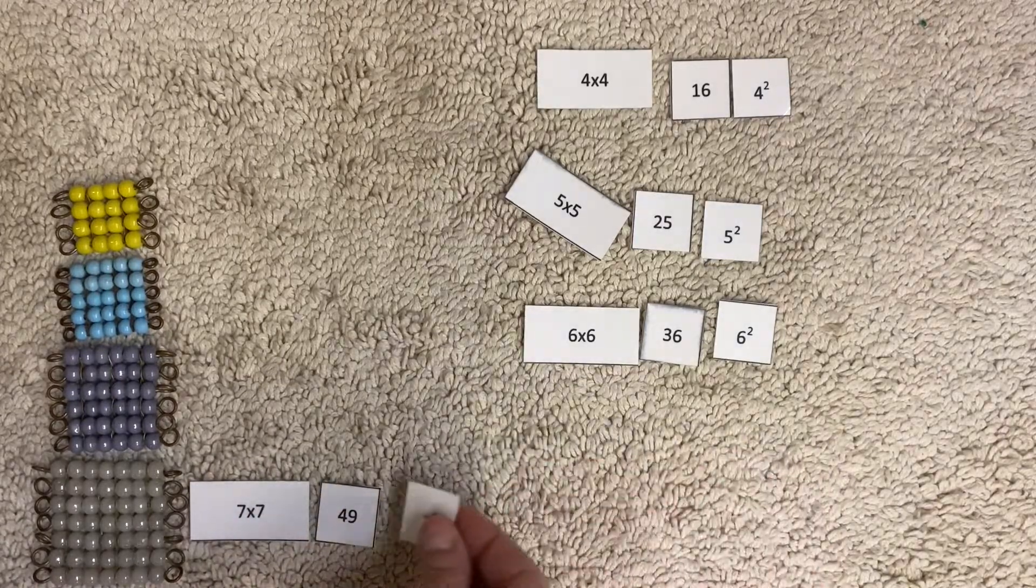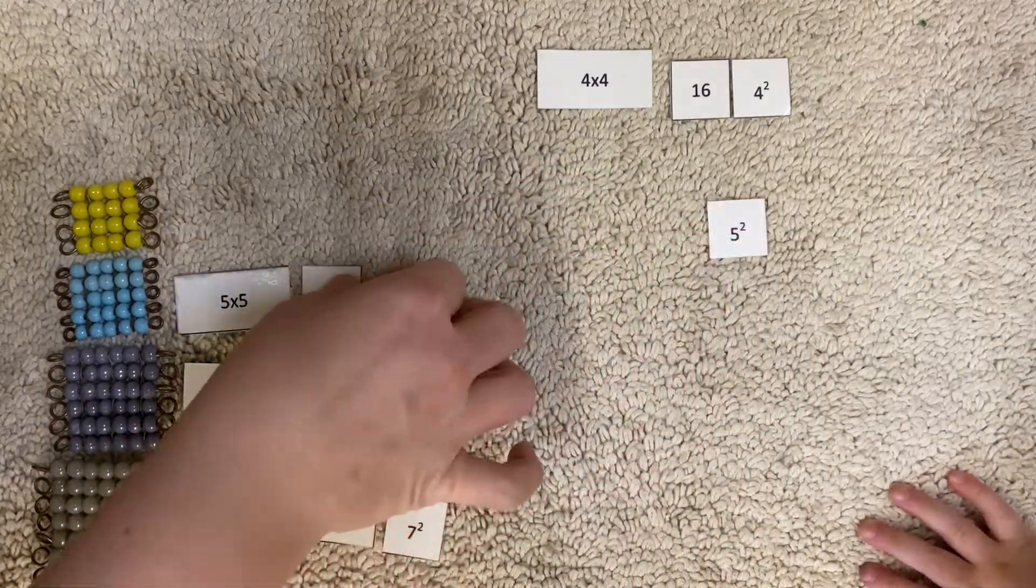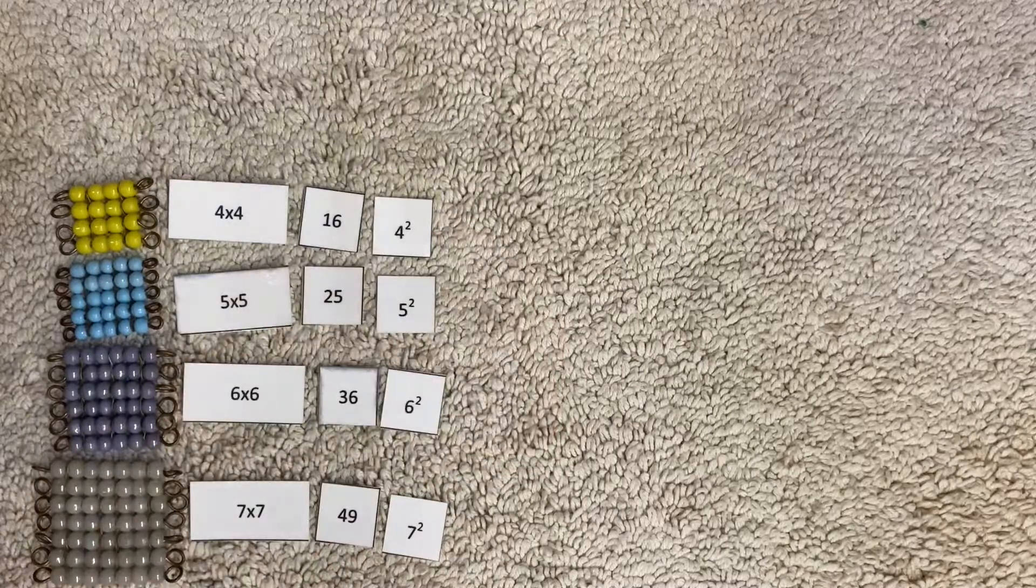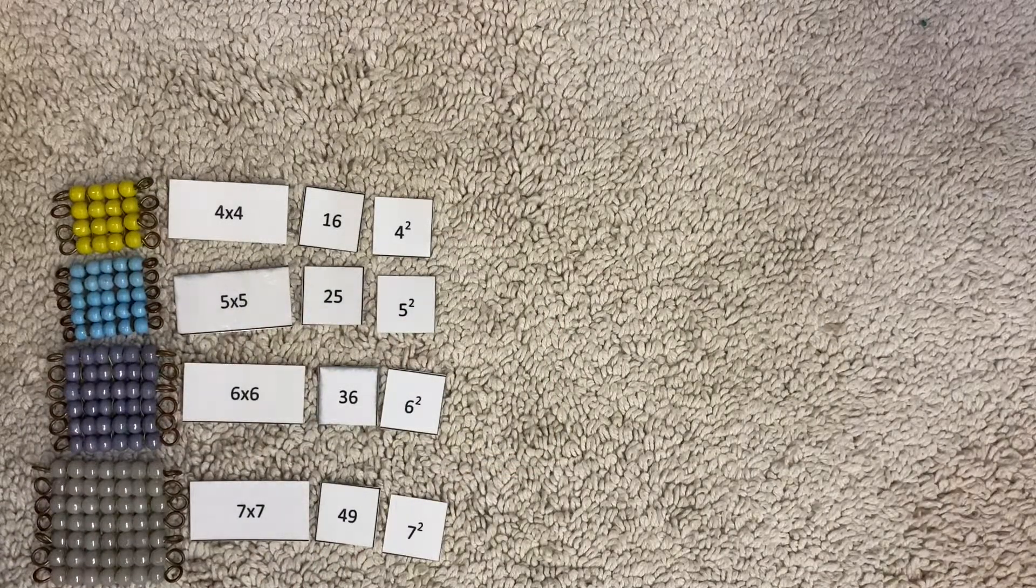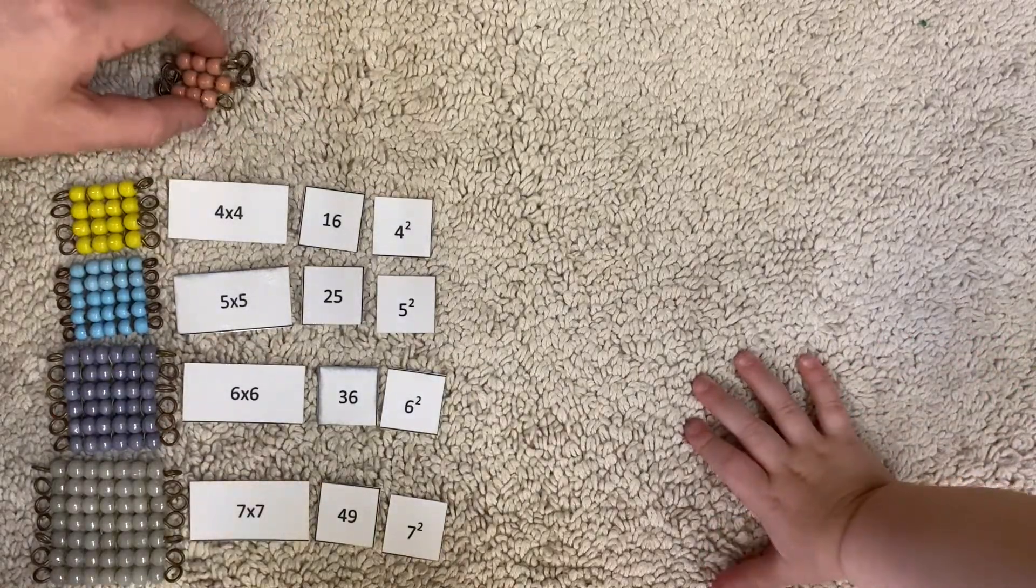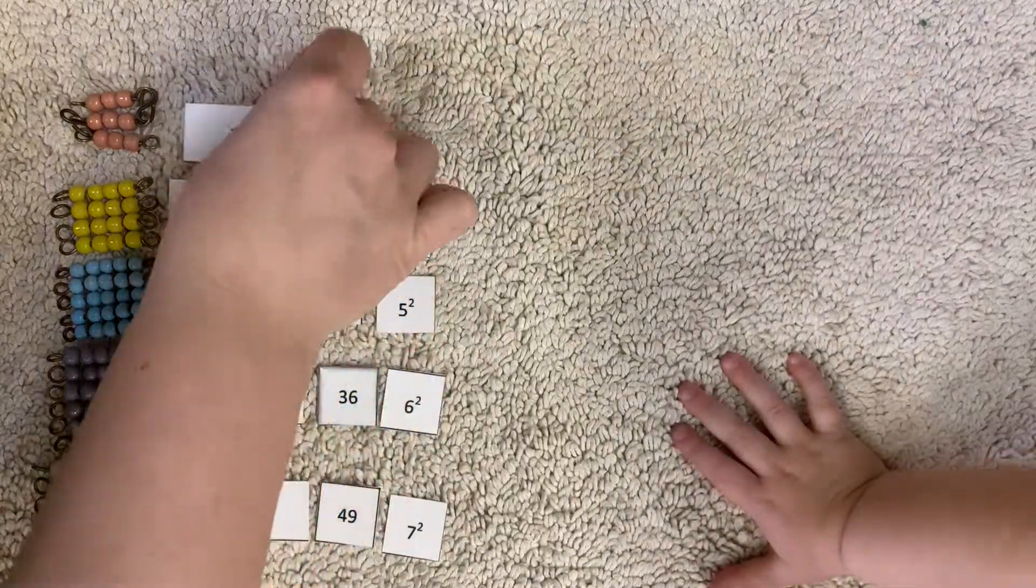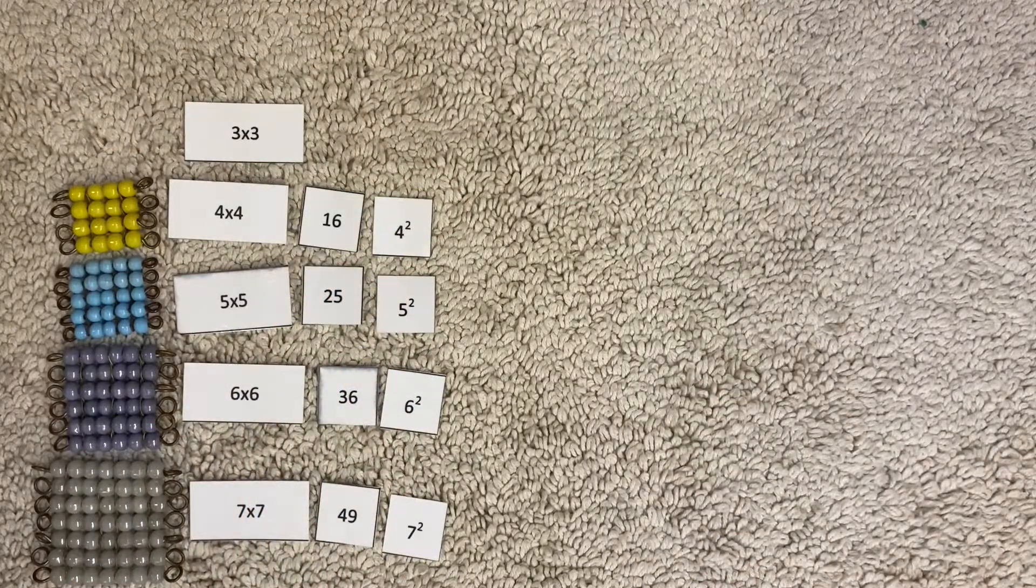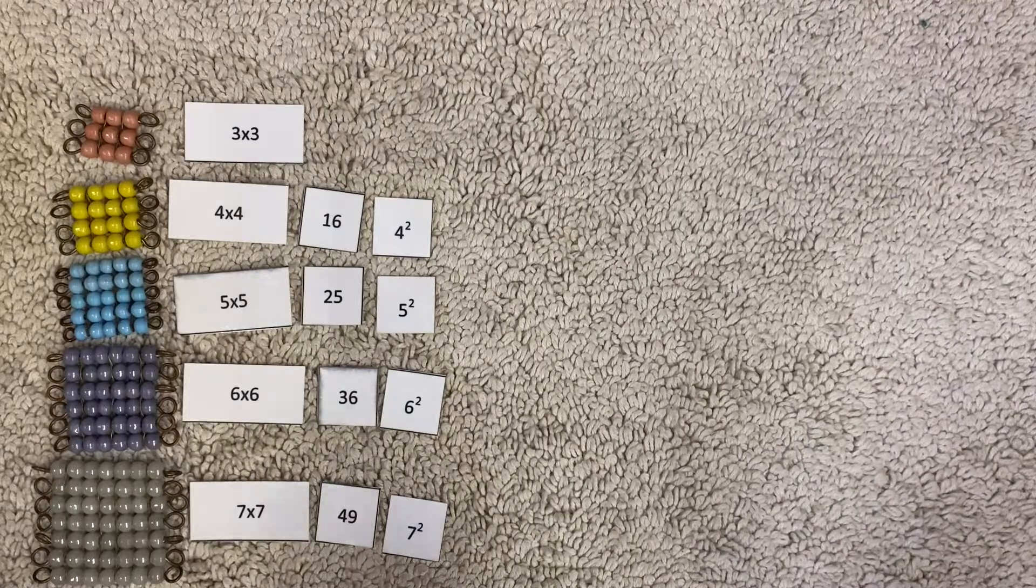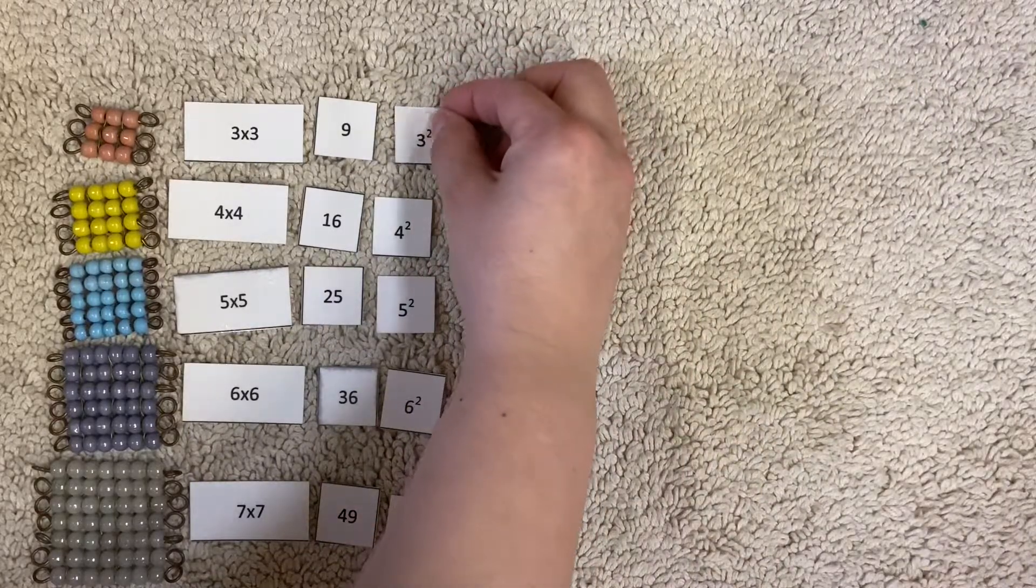I'm going to move this over so we can keep going. Maybe we can fit our three chain. We'll do a little tiny one. There's three times three. We're going to replace it. And what is three times three? Three, six, nine. Let's notate this little guy. We need three and a baby two.